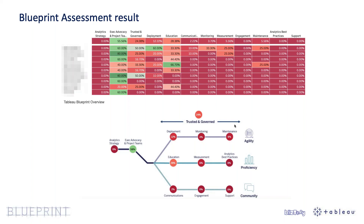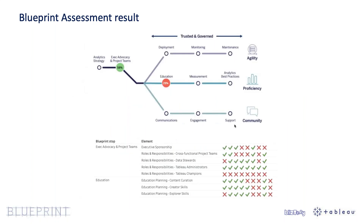This can also teach us what the best approach would be to wrap up certain tasks, and help find where some communication issues lie. On the Blueprint Assessment, the end user filling it out also gets the possibility to write down their top three goals for the next year with Tableau. That's also one of the more important elements that come out of this assessment. The second overview looks something like this.